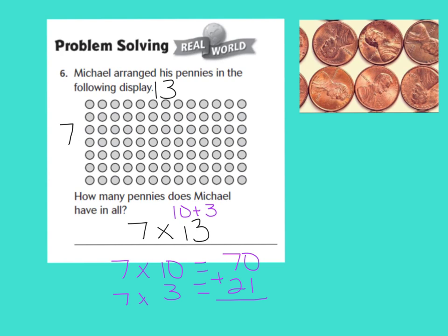Now, I know that 70 plus 21 are the partial products, which we need to add to give us the final product. So, 70 plus 21 gives us 91, which is our final product.